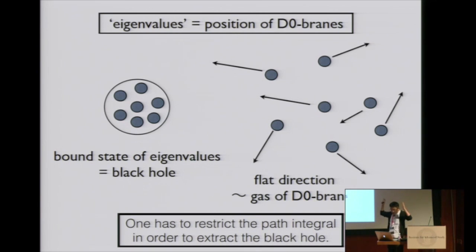Naively, people say eigenvalues of the matrices corresponds to the position of these zero-branes. The black zero-brane or black hole must be the eigenvalue bound state of these zero-branes or bound state of eigenvalues. At the same time, if these zero-branes are separated far away, because of supersymmetry, they don't feel the force with each other. This is a flat direction.